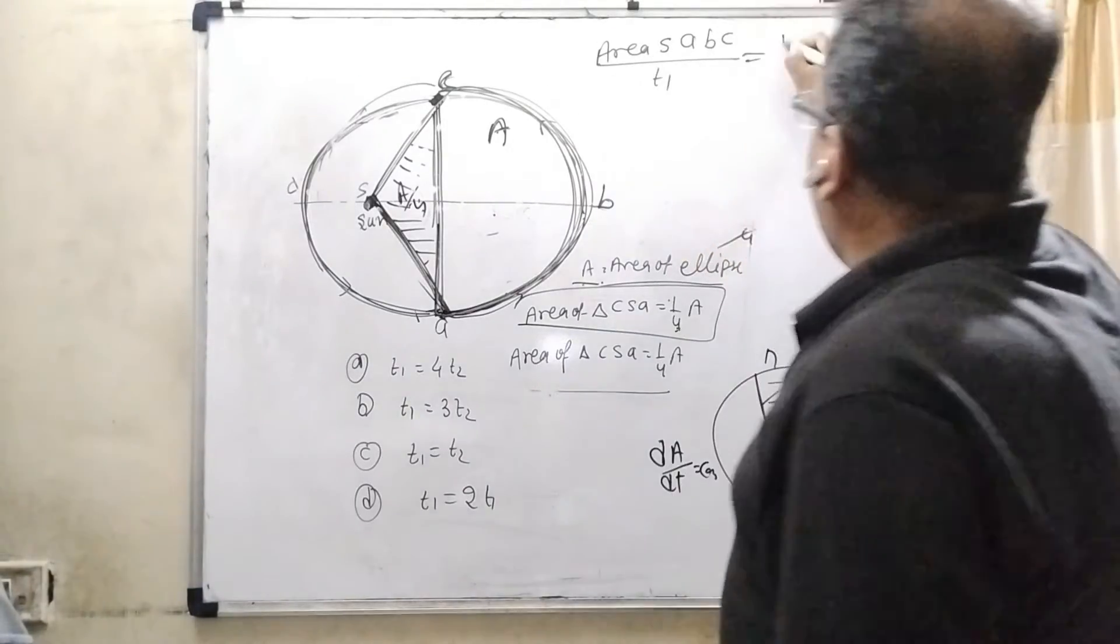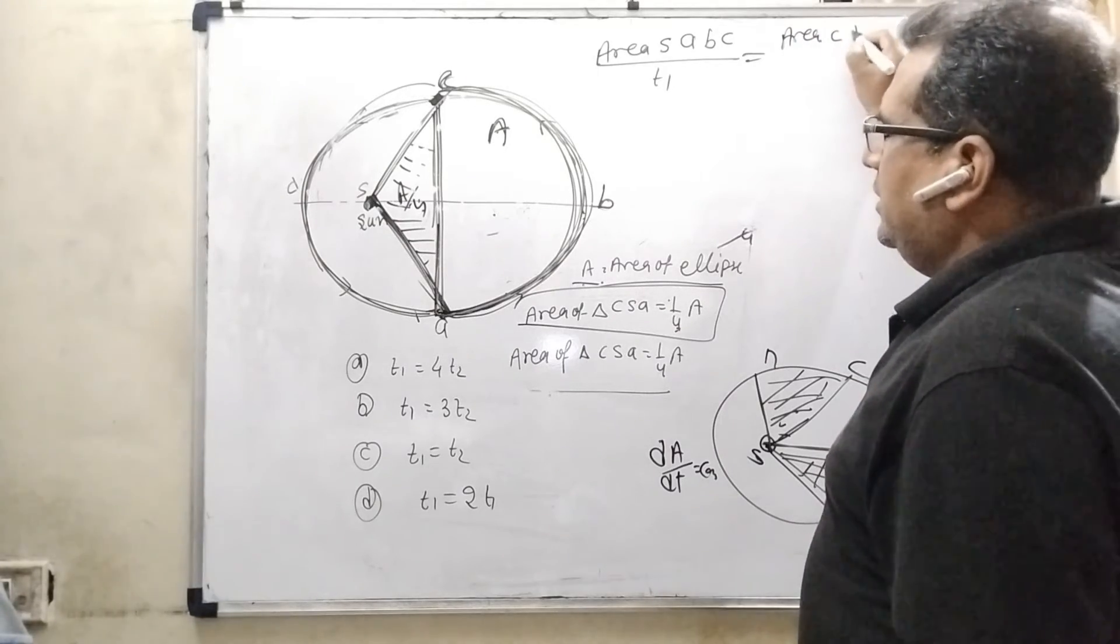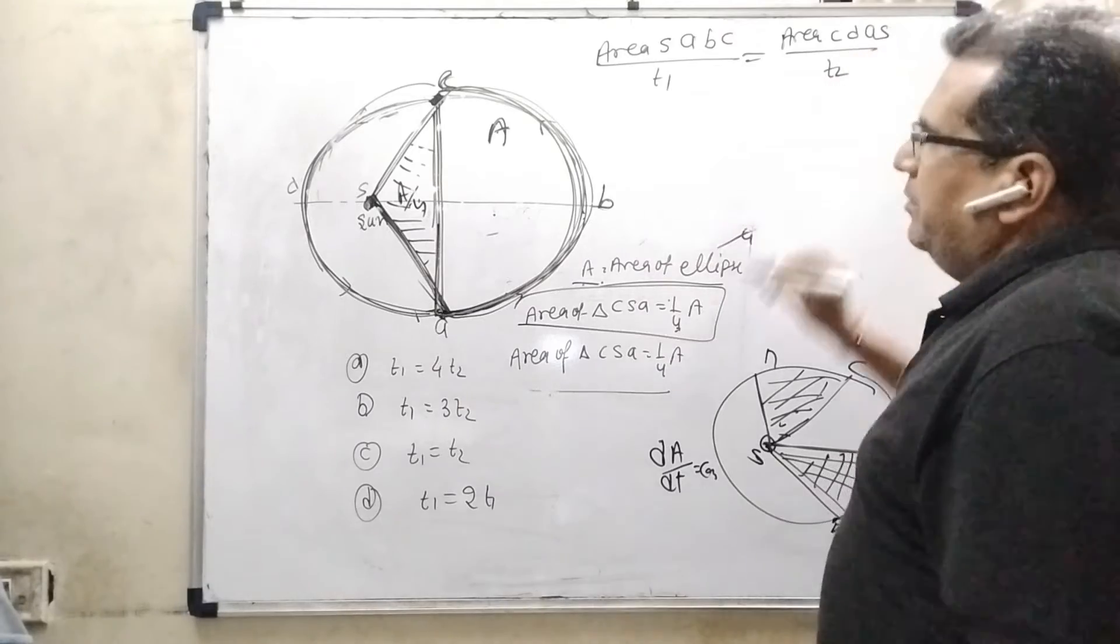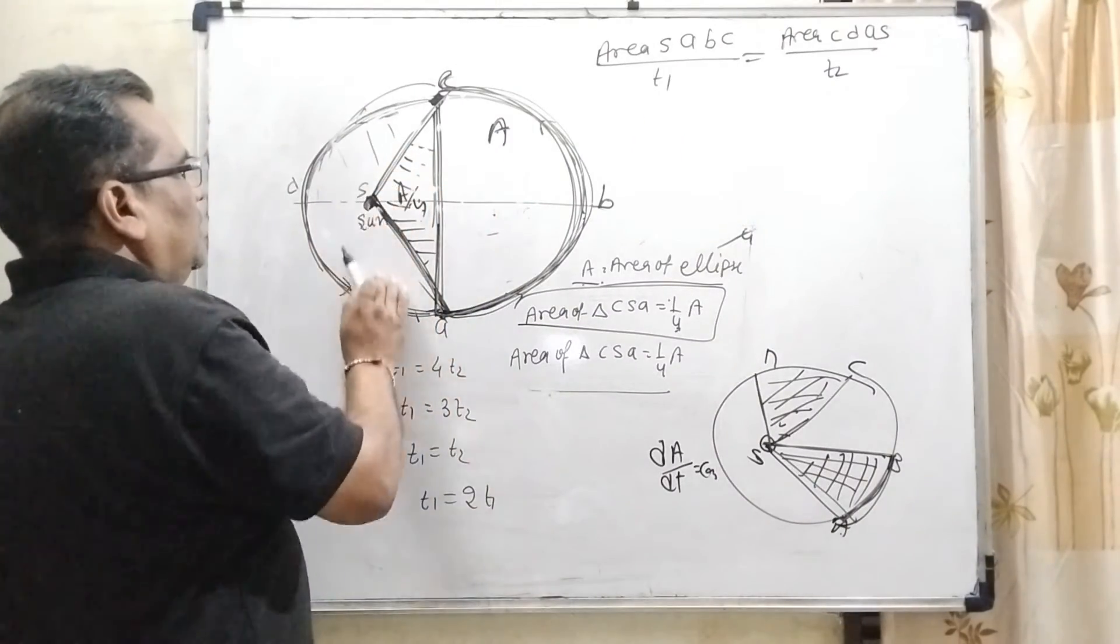So, second part, the area - area C, B, A, S upon T2. Because second part, only we have taken this portion.